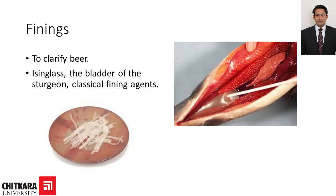Next we have finings. Again, this is also not technically an ingredient — these act as a clarifying agent and are used to clear the beer. The most widely used fining agent is isinglass, which is the bladder of the sturgeon fish, and it is a classical fining agent used throughout the world.